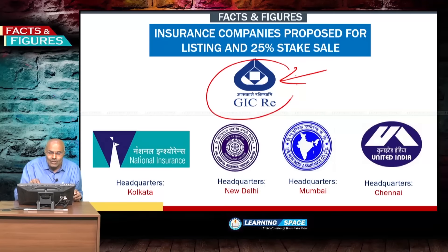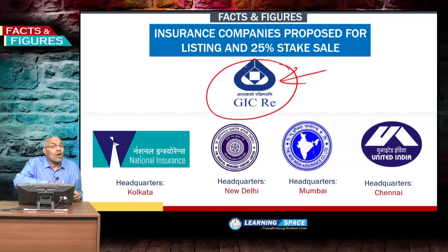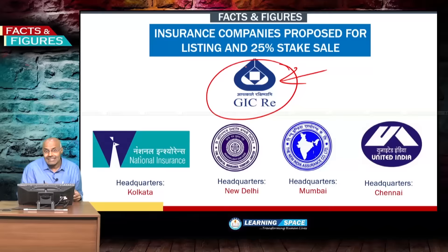Please note that GICRE is India's only reinsurance company. The remaining four general insurance companies sell insurance to firms and individuals. The purpose of the reinsurance company is to take on part of the risk from other general insurance companies.